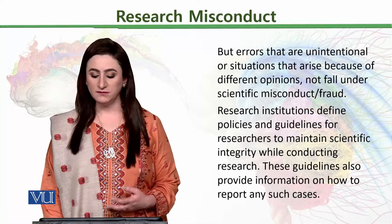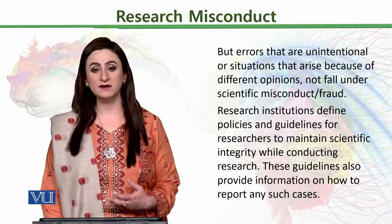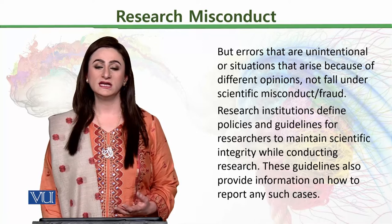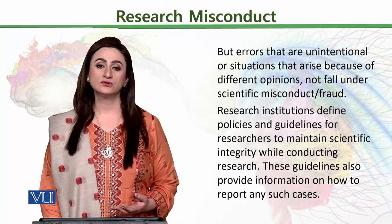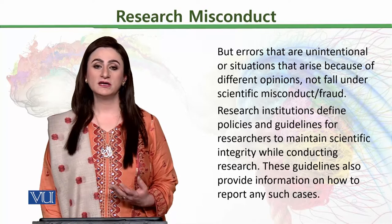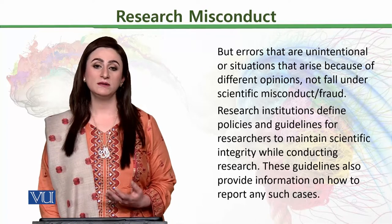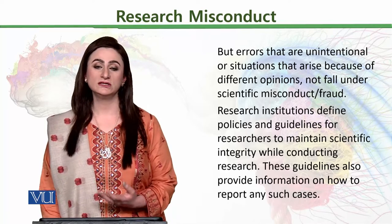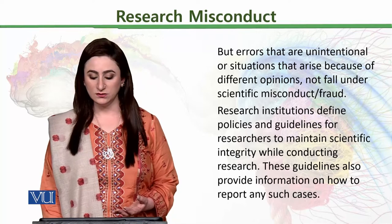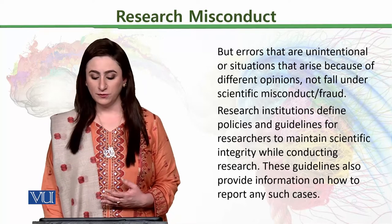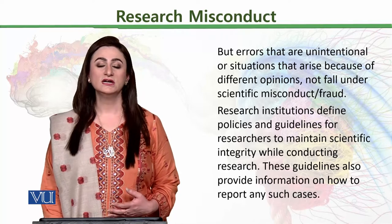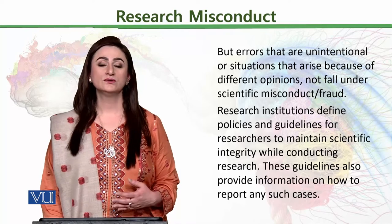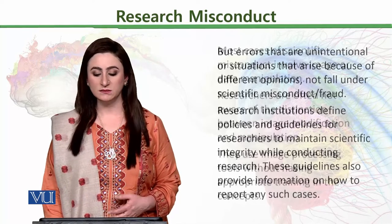Research institutions define policies and guidelines for researchers to maintain scientific integrity while conducting research. There are different stakeholders who identify that we should follow guidelines such as those from HIPAA, APA, and ACGME, which tell researchers the limitations within which their practice will be considered ethical or unethical. These guidelines also provide information on how to report any such cases — for example, if plagiarism is identified in a case, these guidelines tell us the methods for reporting it.